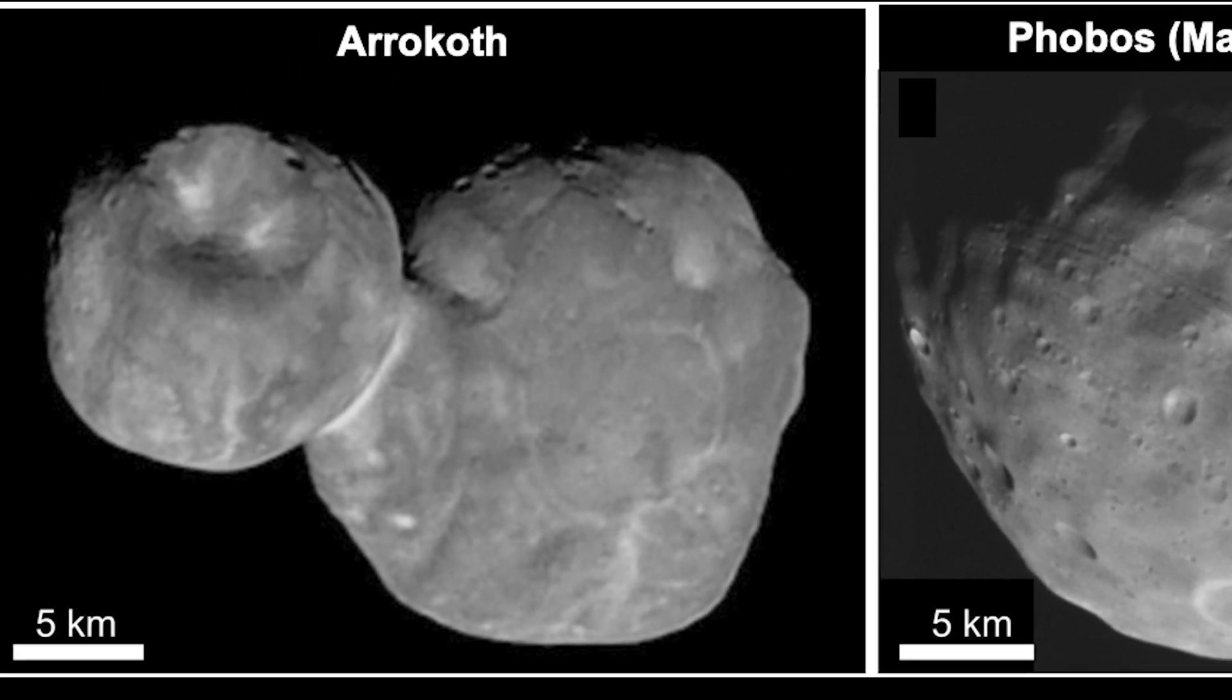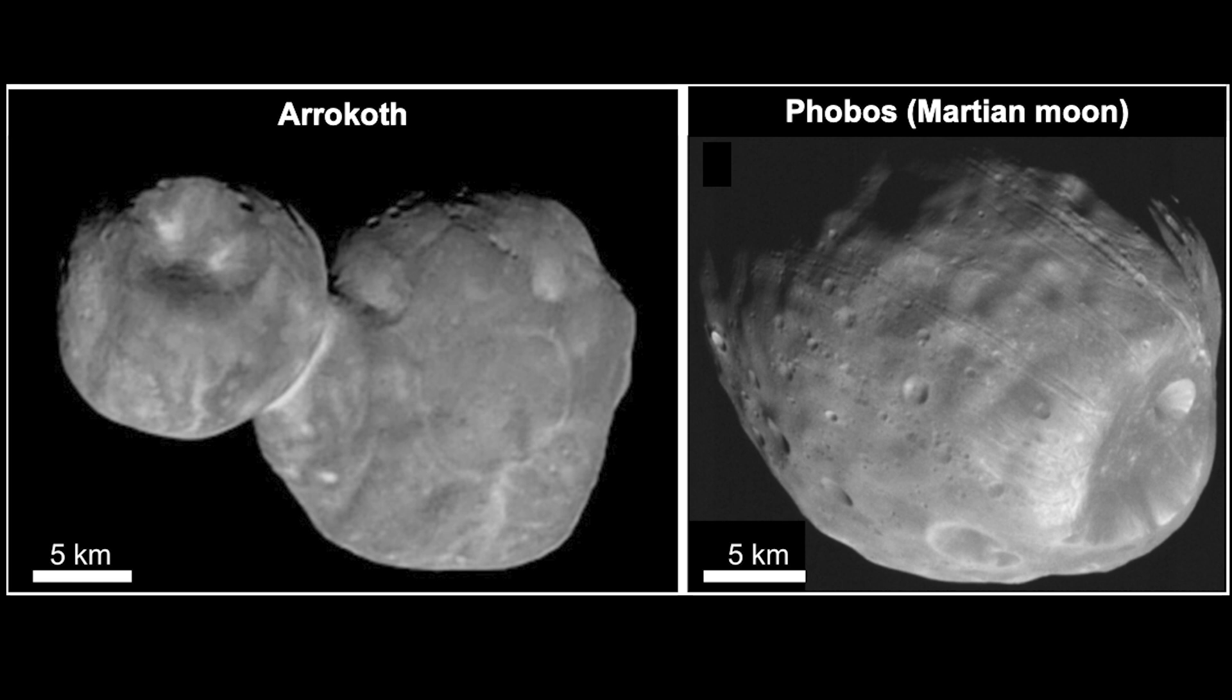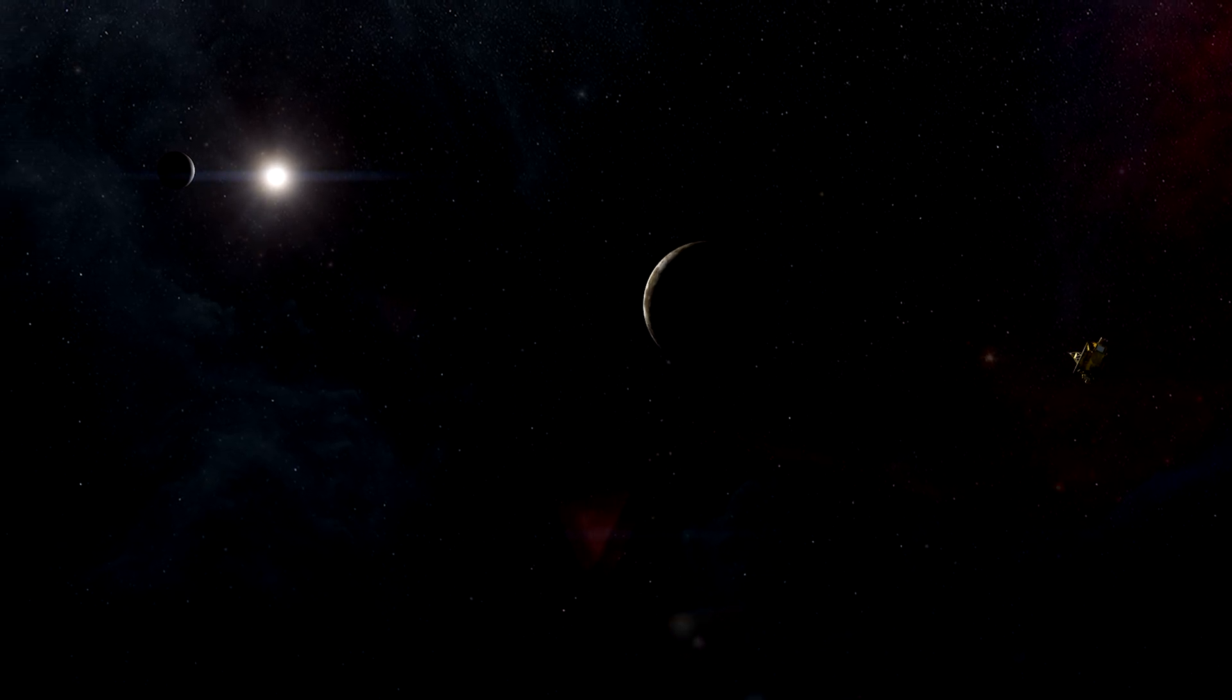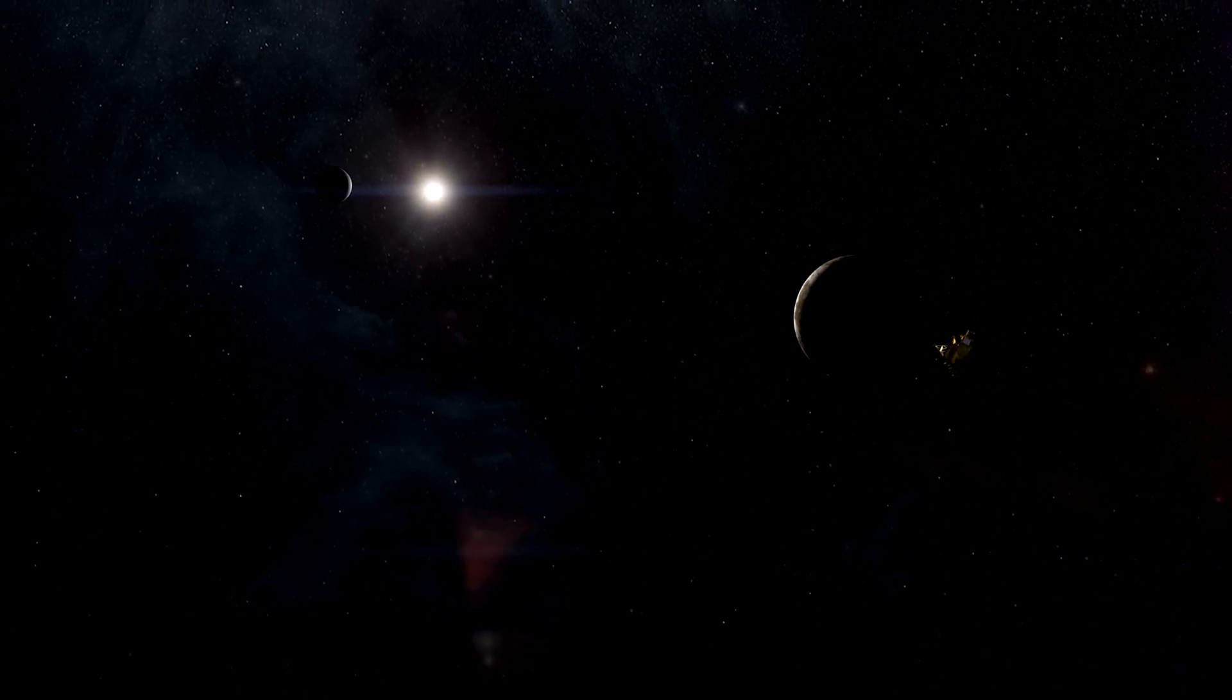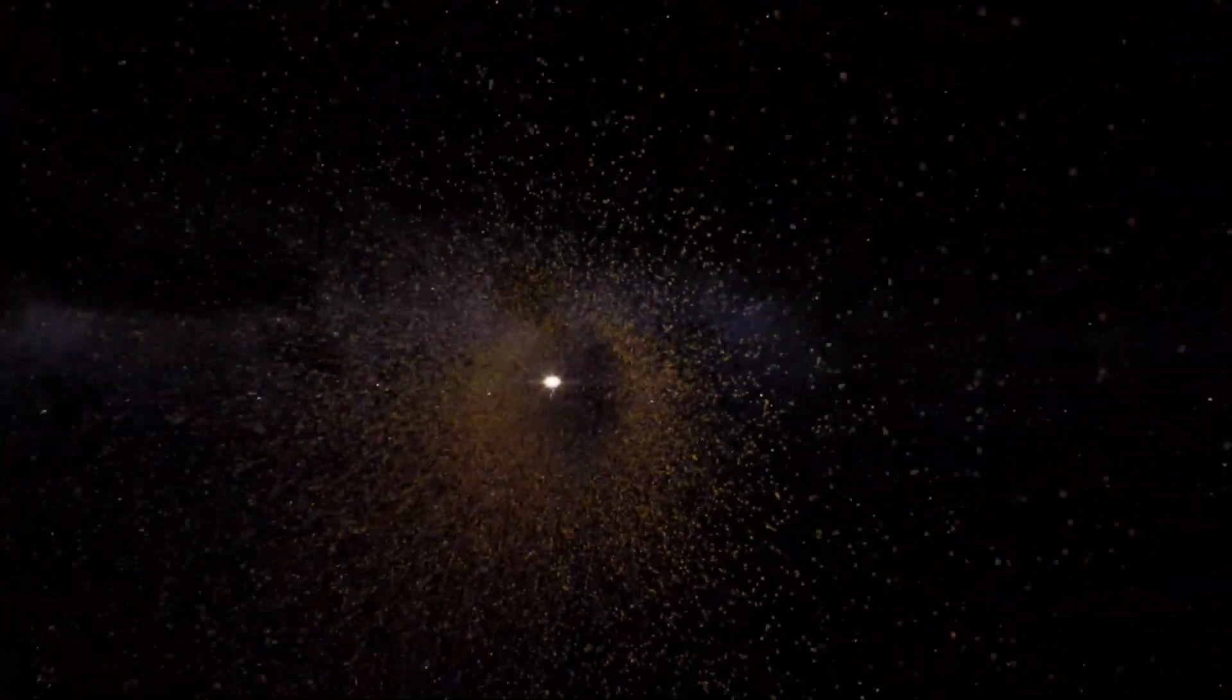Arrokoth, which is about the same size as Mars' moon Phobos, is also what we call a Kuiper Belt Object. It's in a distant region of space beyond Neptune called the Kuiper Belt, filled with ancient objects that have been orbiting the Sun for as long as Earth has, but have been unevolved.